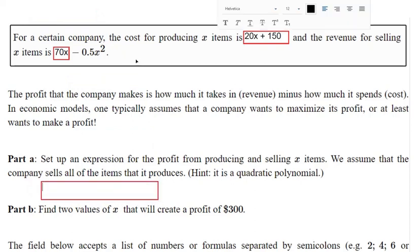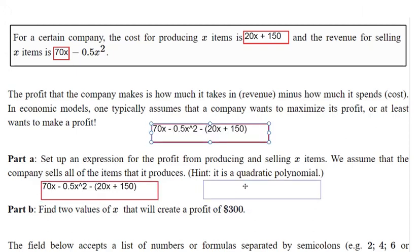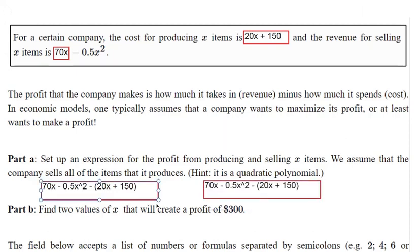So the revenue for mine is 70x minus 0.5x squared, and I want to subtract that by the cost. But this is an important part. This is a big thing we're looking to see in the discussion board is that you don't type it like this. We don't want to see that because all that's doing is subtracting the first term of the cost. We're supposed to subtract the entire cost, so you've got to use parentheses. And that's it. It just needs to be simplified. That is an expression for the profit.